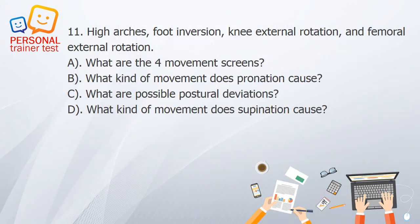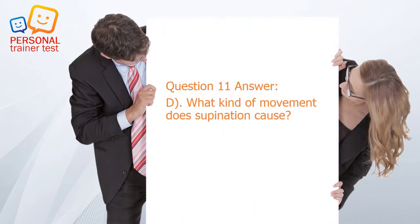Question 11. A. What are the four movement screens? B. What kind of movement does pronation cause? C. What are possible postural deviations? D. What kind of movement does supination cause? Answer: D. Supination causes high arches, foot inversion, knee external rotation, and femoral external rotation.